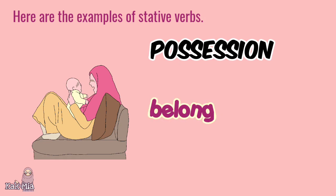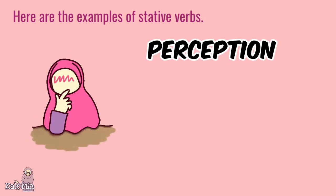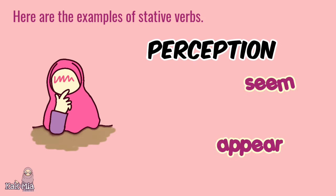The next category is verbs related to possession. For examples: belong, have, and own. The last category is perception. For examples: seem, appear, and consider.